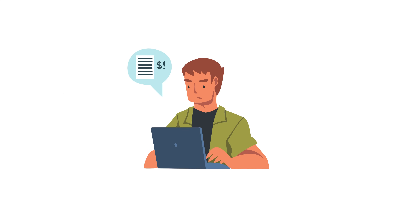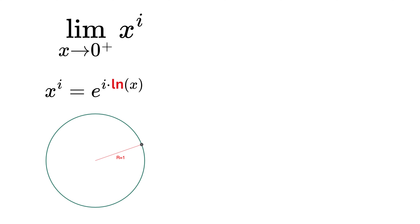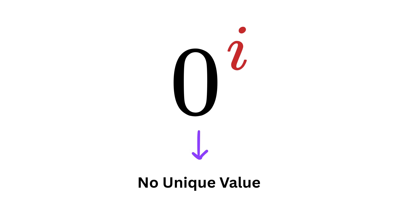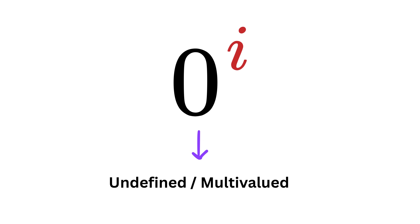So to summarize: 0 raised to i cannot be evaluated like regular exponents, because it involves the natural log of 0, which is undefined. When we try to approach 0 from the positive or negative direction using complex logarithms, the result ends up spinning endlessly around a circle — either of unit radius or smaller, depending on the branch we choose. That's why 0 raised to i has no unique well-defined value. It's undefined or multivalued depending on how you approach it. This shows that sometimes in mathematics, the journey to arrive at an answer is far more beautiful than the answer itself.